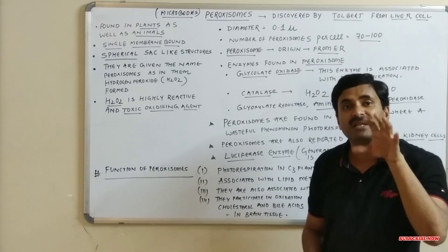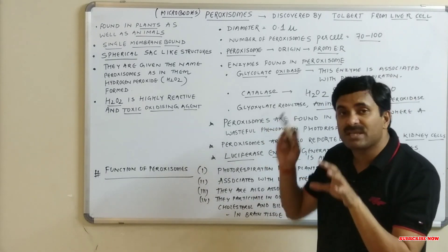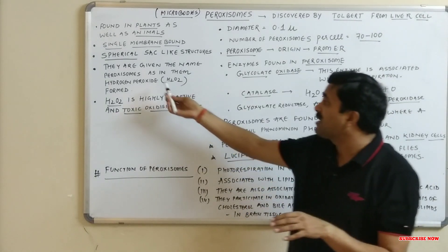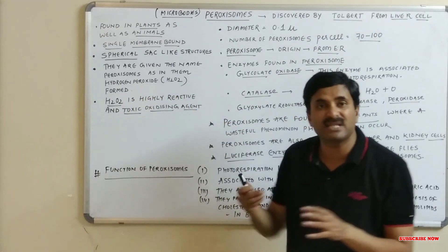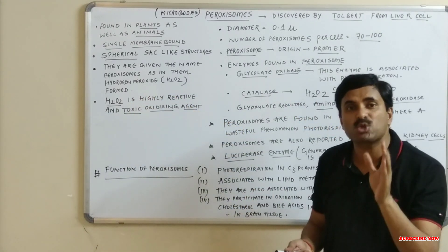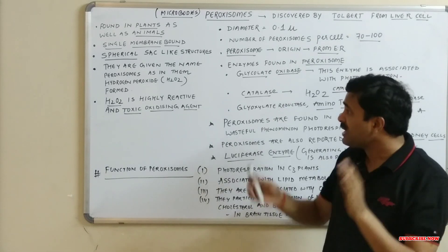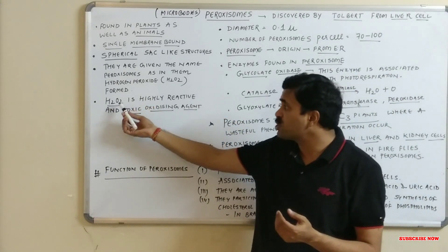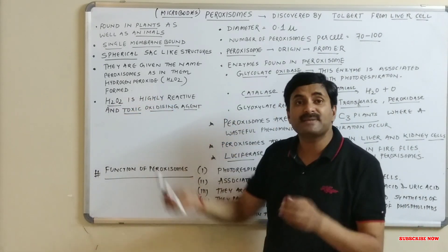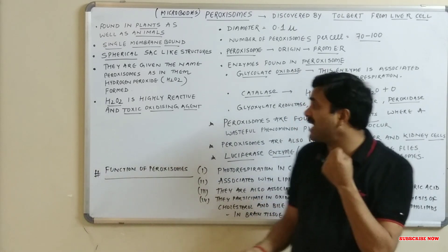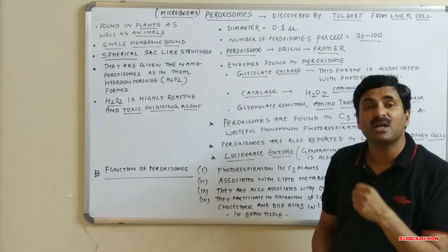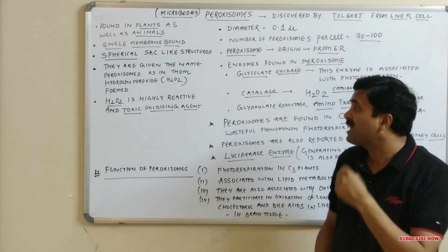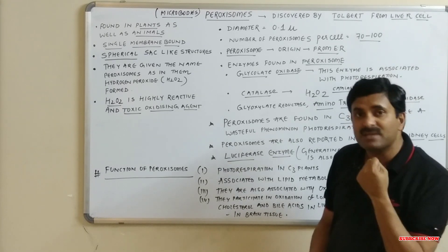The question arises: why are peroxisomes given this name? They are given the name peroxisome because hydrogen peroxide — H2O2 — is formed in them. That is why they are called peroxisomes. H2O2, that is hydrogen peroxide, is highly reactive and is also called a toxic oxidizing agent, meaning these hydrogen peroxides are toxic for the cell.